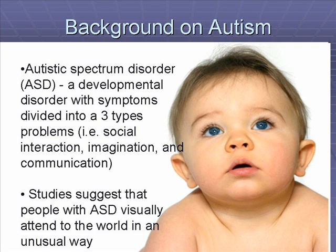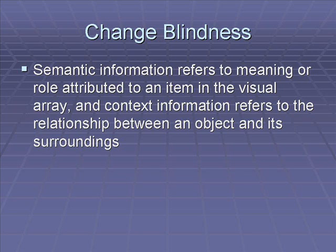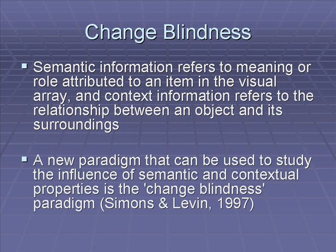Importantly, studies suggest that people with ASD visually attend to the world in an unusual way. In this study on change blindness, semantic information refers to the meaning or role attributed to an item in the visual array, and contextual information refers to the relationship between an object and its surroundings. A new paradigm that can be used to study the influence of semantic and contextual properties is the paradigm of change blindness.